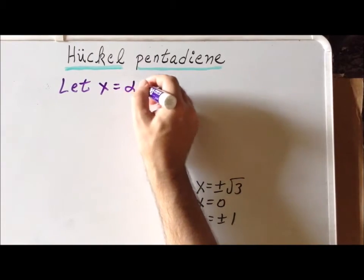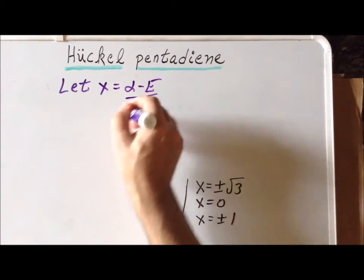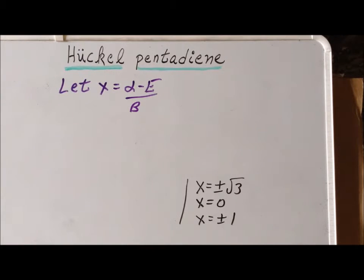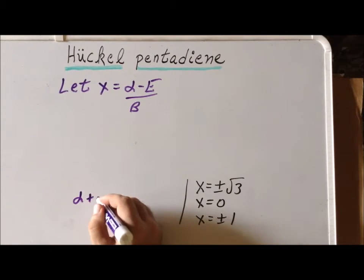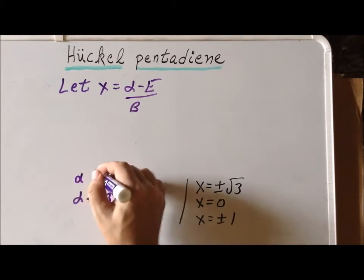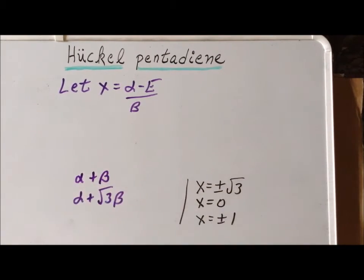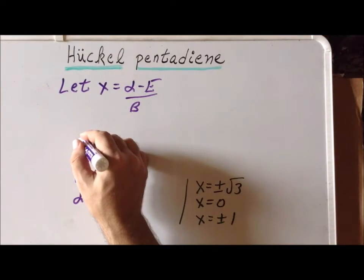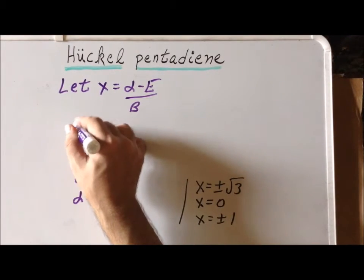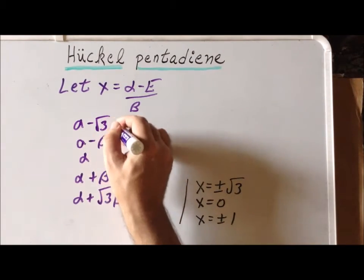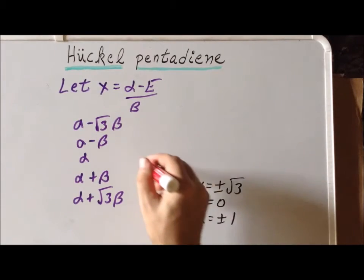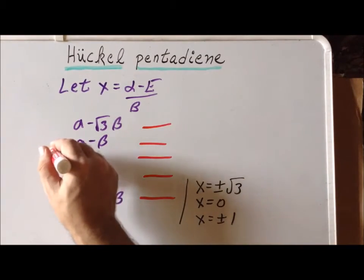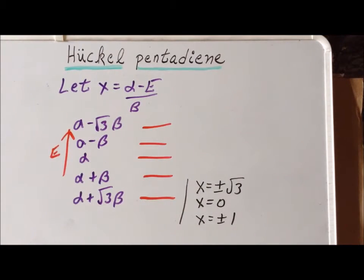Recall that x equals (alpha minus the energy) divided by beta. The five energy states are: the lowest energy, alpha plus the square root of 3 times beta; then alpha plus beta; then alpha; then alpha minus beta; and the highest energy, alpha minus the square root of 3 times beta. Recall that beta is a negative number, so the plus-beta terms are lower in energy. Thank you very much for your attention.